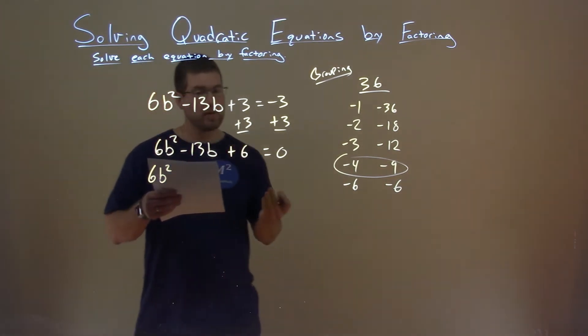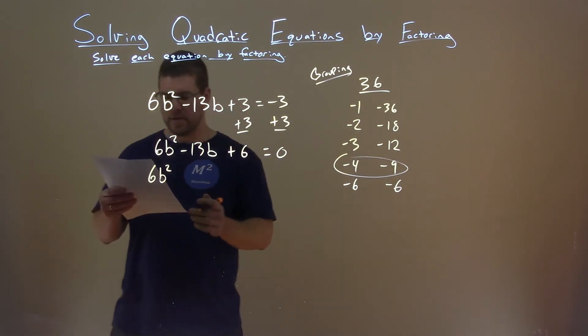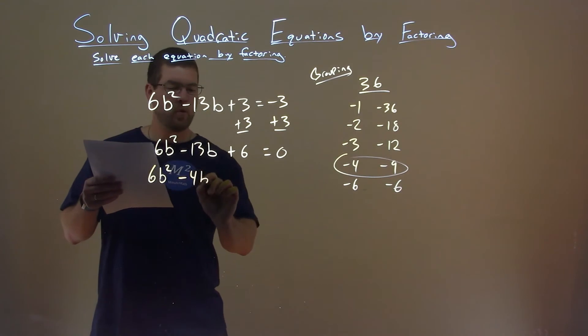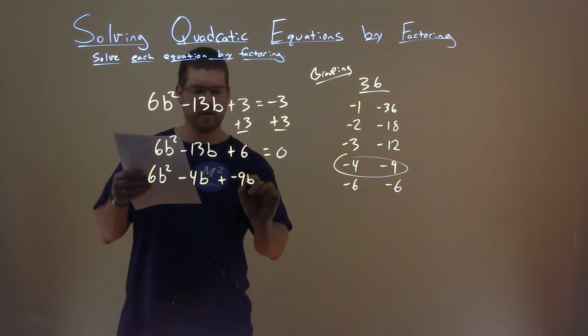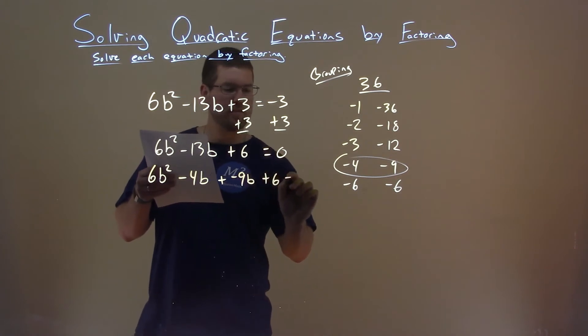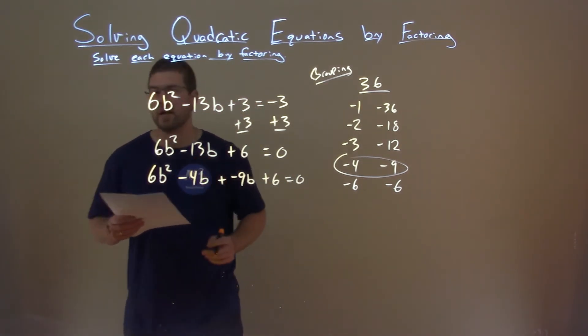So, now I'm going to rewrite this, 6b squared, and instead of minus 13b, I'm going to combine these two, because I know that will be a negative 13b together. Minus 4b, plus a negative 9b here, plus 6 equals 0. So, negative 4b plus a negative 9b is my negative 13b.